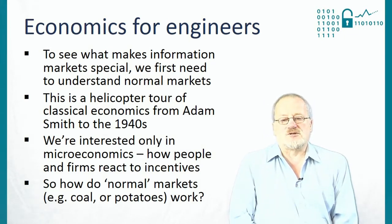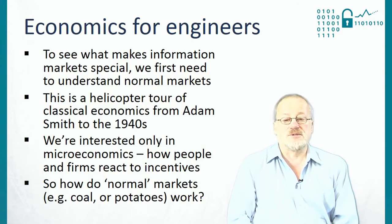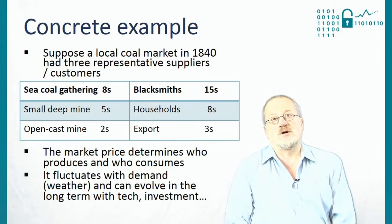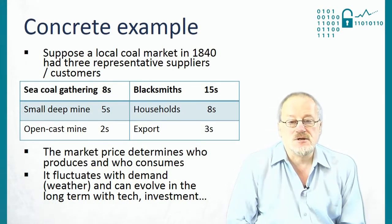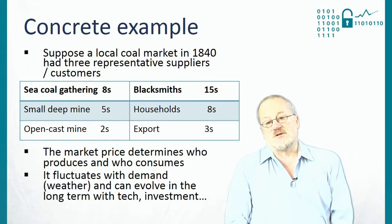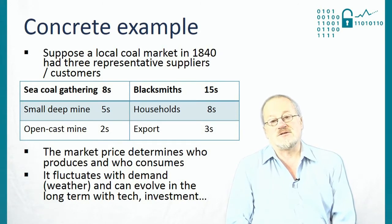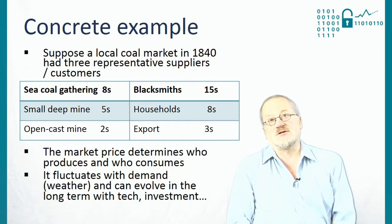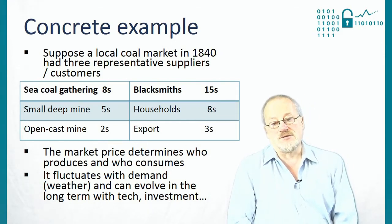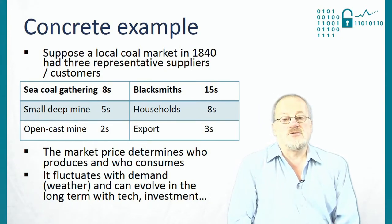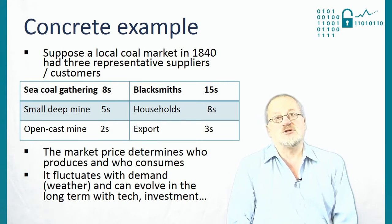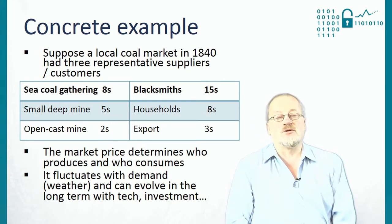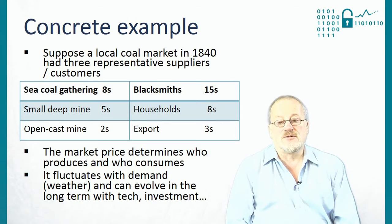So how do normal markets work — say, the market for coal or the market for potatoes? As a concrete example, let's think about how the coal market might have worked in Newcastle in the 1840s. You might have three representative suppliers: an open-cast mine costing two shillings per tonne to operate, a small deep mine costing five shillings a tonne, and at the high-cost end, people collecting coal washed up on the beach, who wouldn't do that unless they could get eight shillings a tonne.